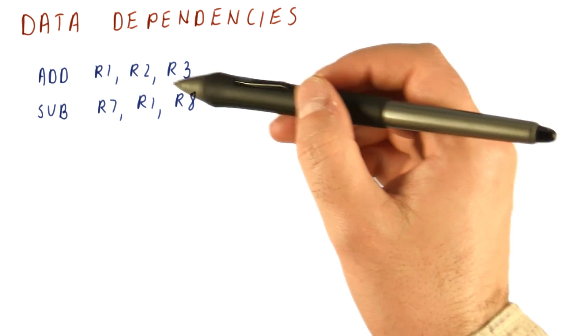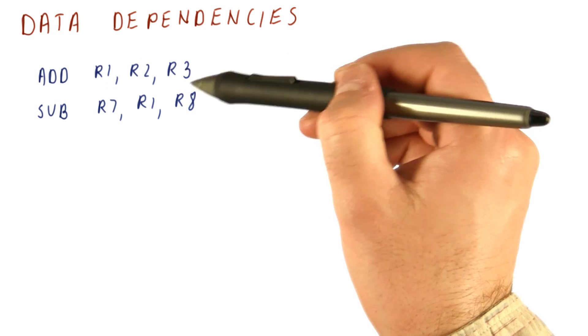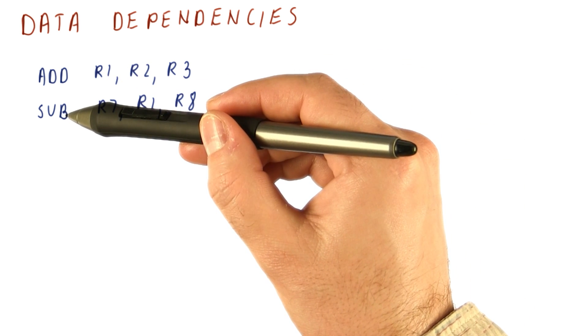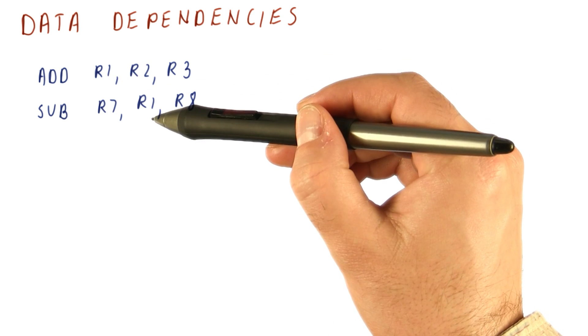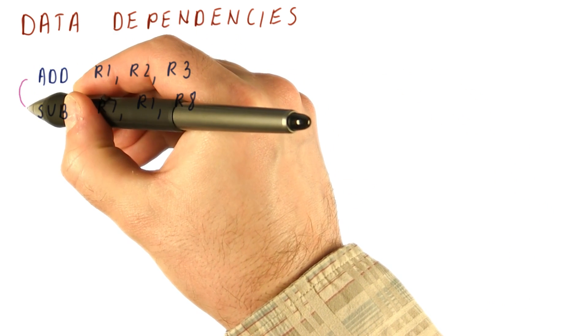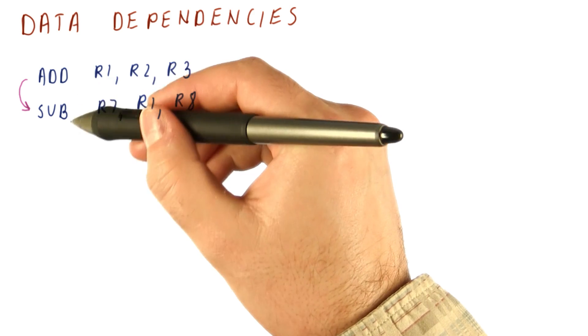Consider these two instructions. We add R2 and R3, put the result in R1. Then the subtract instruction here takes R1 and uses it to compute R7. We say that the subtract instruction has a data dependence on this add.